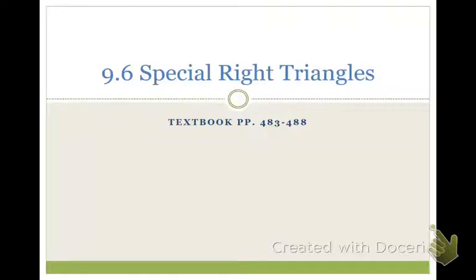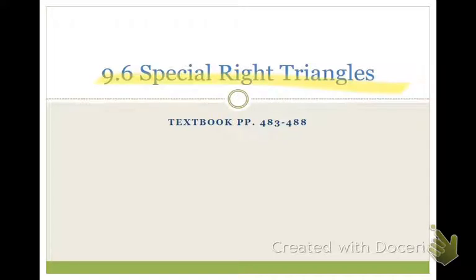Today we're in section 9.6, special right triangles. Special meaning there are specific angle measurements in these triangles that make something true about the side lengths. Just any combination of angles adding up to 180 doesn't necessarily work for these templates.